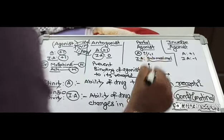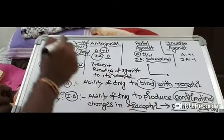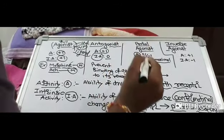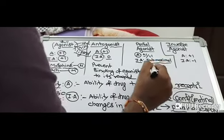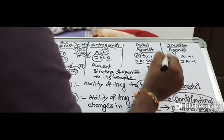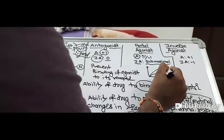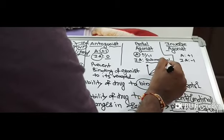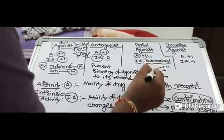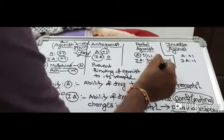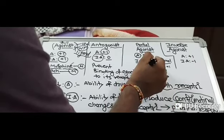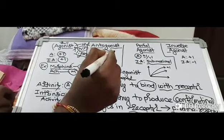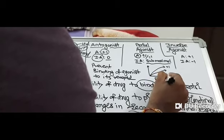What is the difference between an agonist and a partial agonist? A full agonist will produce a maximum response at a therapeutic dose, whereas a partial agonist will produce only a submaximal response — whatever the concentration, it will only produce this much response. This is because the partial agonist has submaximal intrinsic activity; regardless of concentration, the response is limited.